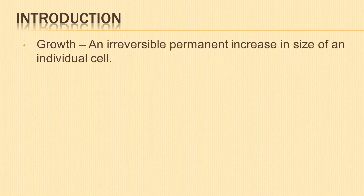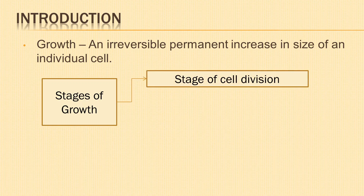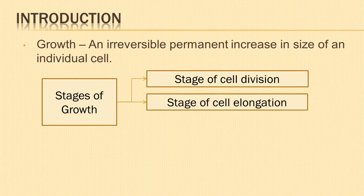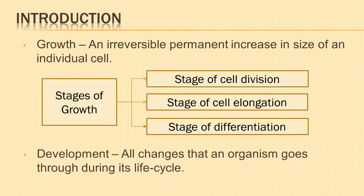Let us start by defining growth and development. Growth can be defined as an irreversible permanent increase in size, shape, volume, and dry weight of an organ or its parts or even of an individual cell. Growth in plants involves three stages: stage of cell division, stage of cell elongation, and stage of differentiation. Development is a term that includes all changes that an organism goes through during its life cycle, including growth, differentiation, maturation, and senescence.